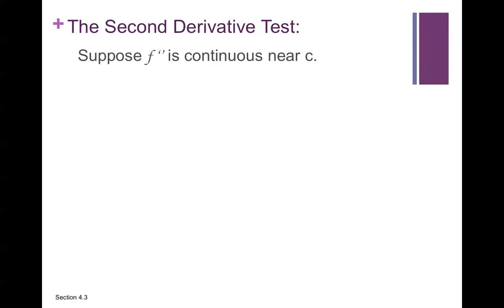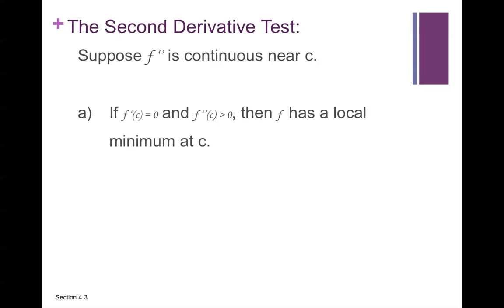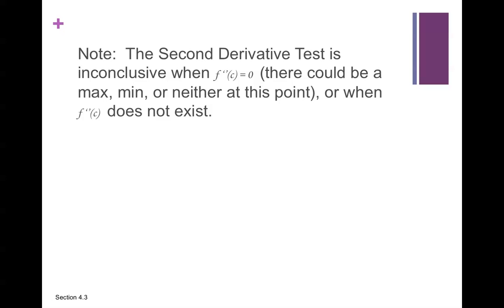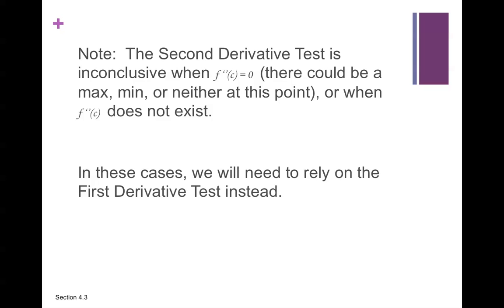The Second Derivative Test. Suppose f double prime is continuous near c. If f prime of c equals 0 and f double prime of c is greater than 0, then f has a local minimum at c. If f prime of c equals 0 and f double prime of c is less than 0, then f has a local maximum at c. Note that it is kind of the opposite of what you might think: greater than 0 means minimum, less than 0 means maximum. The second derivative test is inconclusive when f double prime of c equals 0 or when f double prime of c does not exist. In those cases we need to rely on the first derivative test instead.